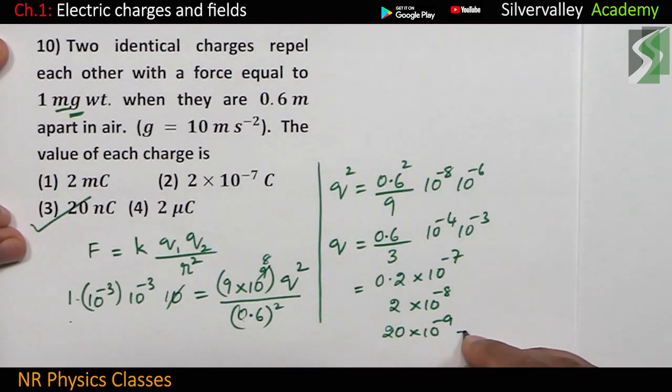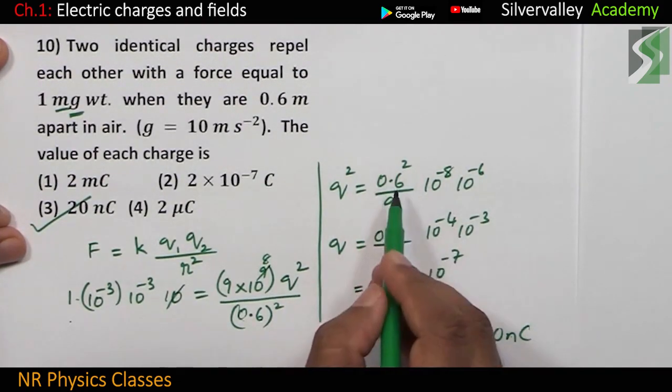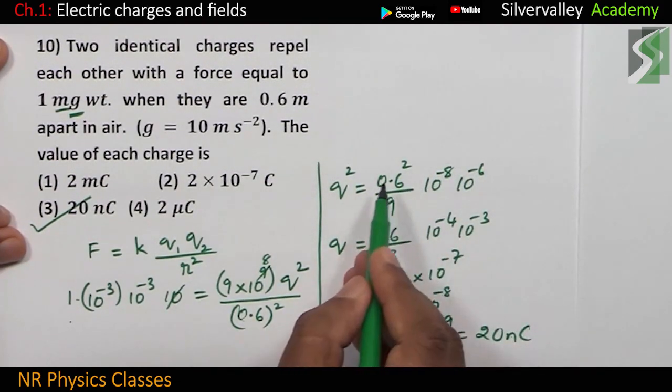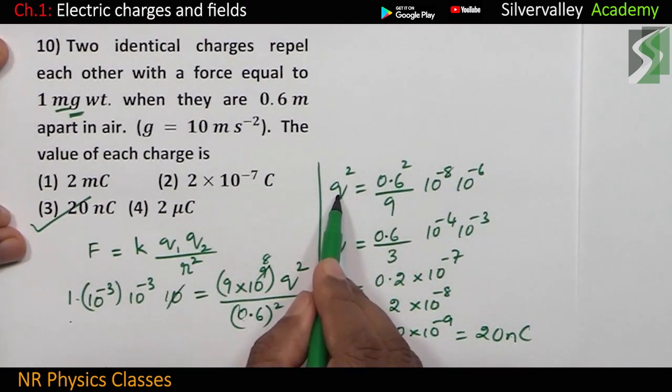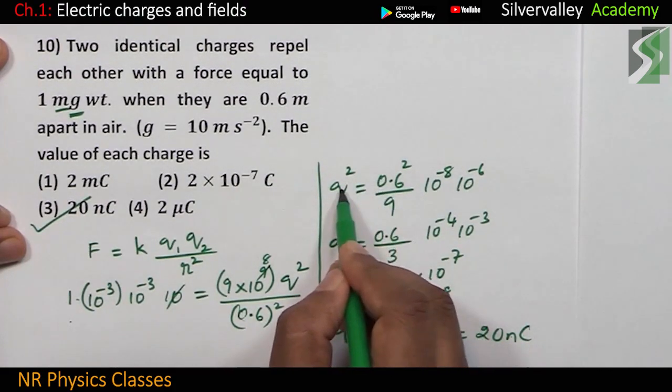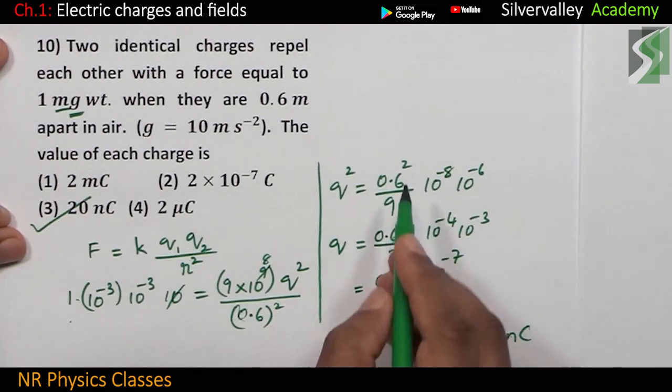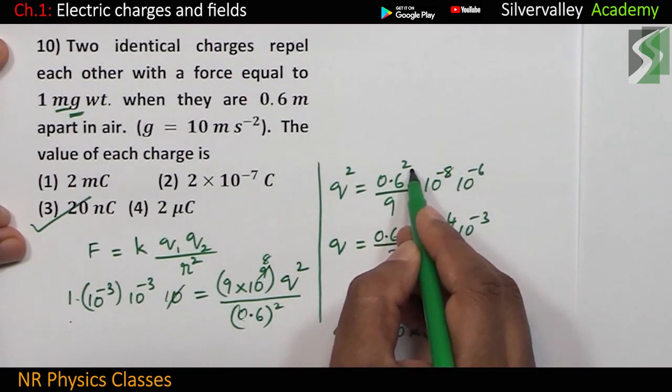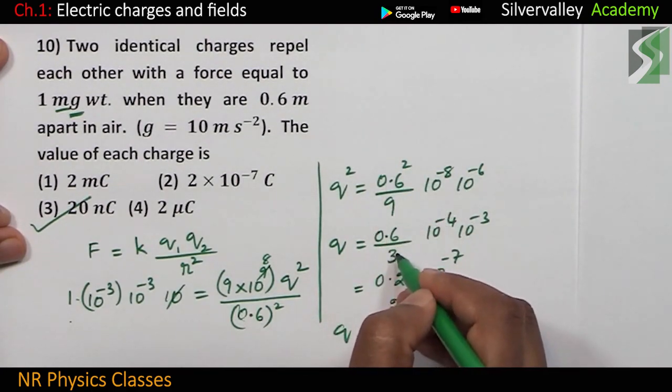10 to the power minus 9 is nano, isn't it? So, 20 nanocoulomb. Students observe, you don't have to simplify this because anyway you know that we have to take square root. Since we have to take square root, it should be 0.6 square. If it is 0.6 square, it is easy to simplify.